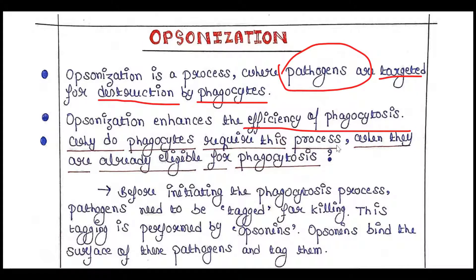Why do phagocytes require opsonization when they are already eligible for phagocytosis? They have all the machinery to undergo phagocytosis. The answer is that before initiating phagocytosis, pathogens need to be tagged for killing.